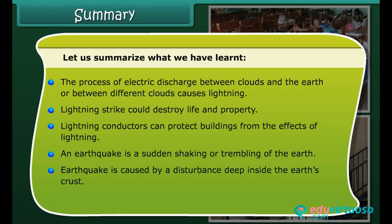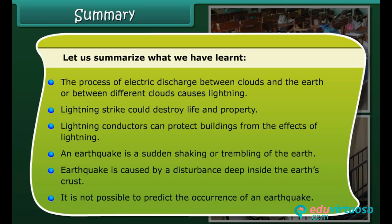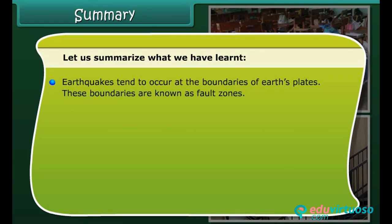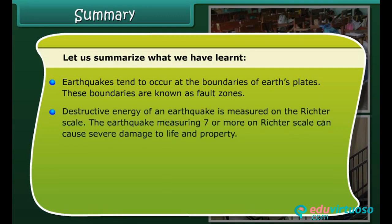An earthquake is a sudden shaking or trembling of the earth. It is caused by a disturbance deep inside the earth's crust, and it is not possible to predict the occurrence of an earthquake. Earthquakes tend to occur at the boundaries of earth's plates — these boundaries are known as fault zones. The destructive energy of an earthquake is measured on the Richter scale.